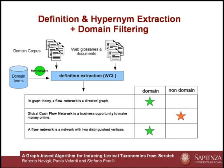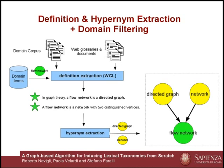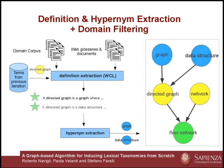Domain filtering is performed by keeping only those definitions whose score is above a threshold, obtained by tuning empirically on a manually annotated dataset of definitions. Then for each domain-filtered definition, we extract the hyponym of the target term and add a new ISA relationship to the hyponym graph. We apply this process iteratively to the set of previously extracted hyponyms until a stop condition is reached.